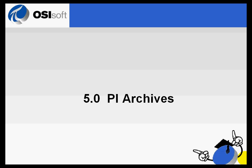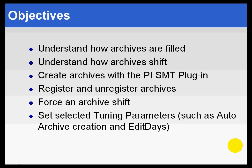Section 5.0: PI Archives. The objectives in this section are: first, we want to explain how archives are filled and do what we call a shift after they fill up completely.